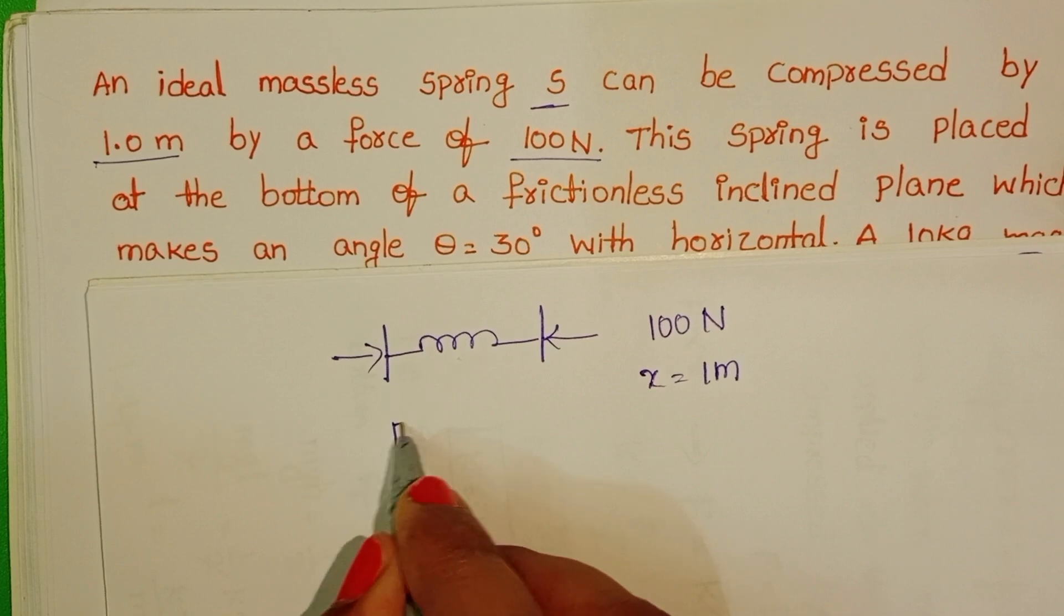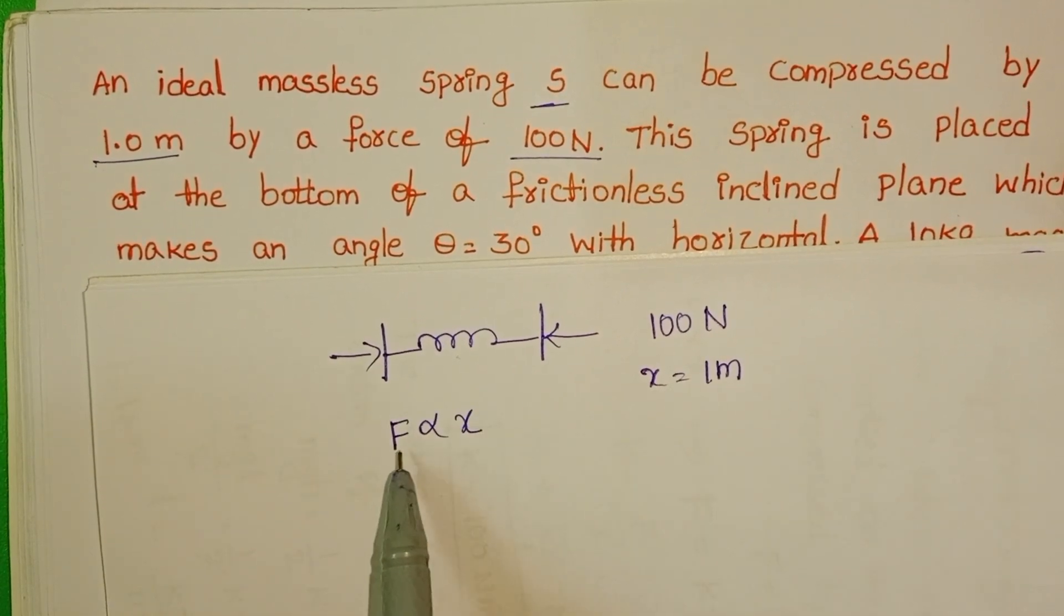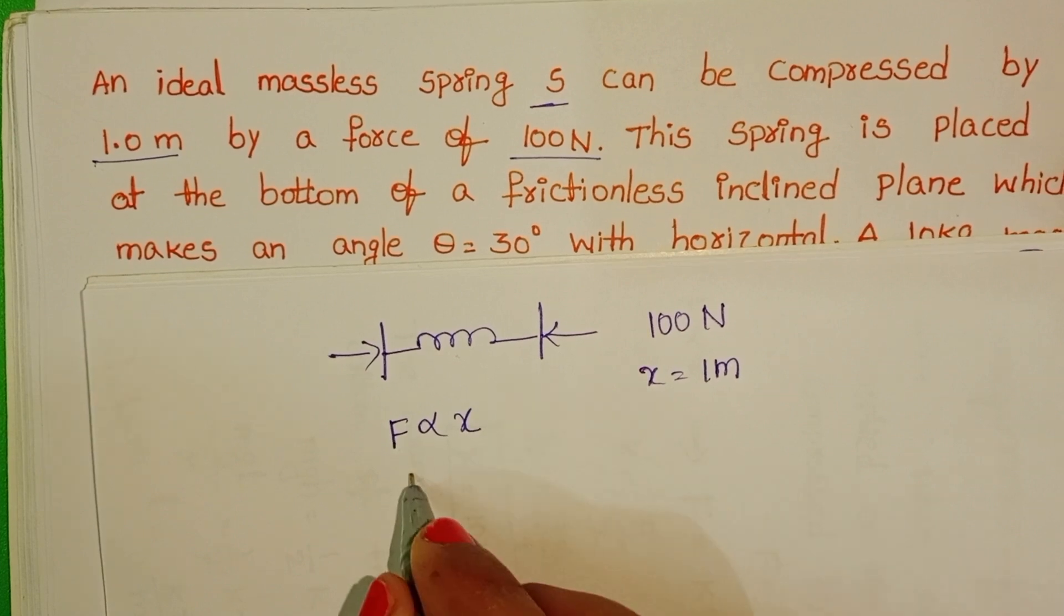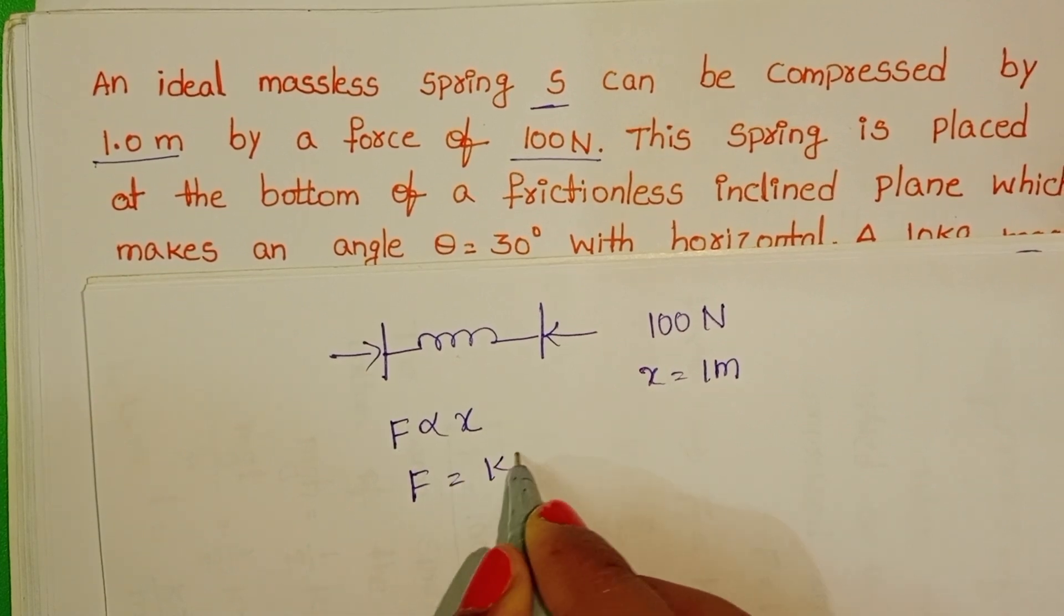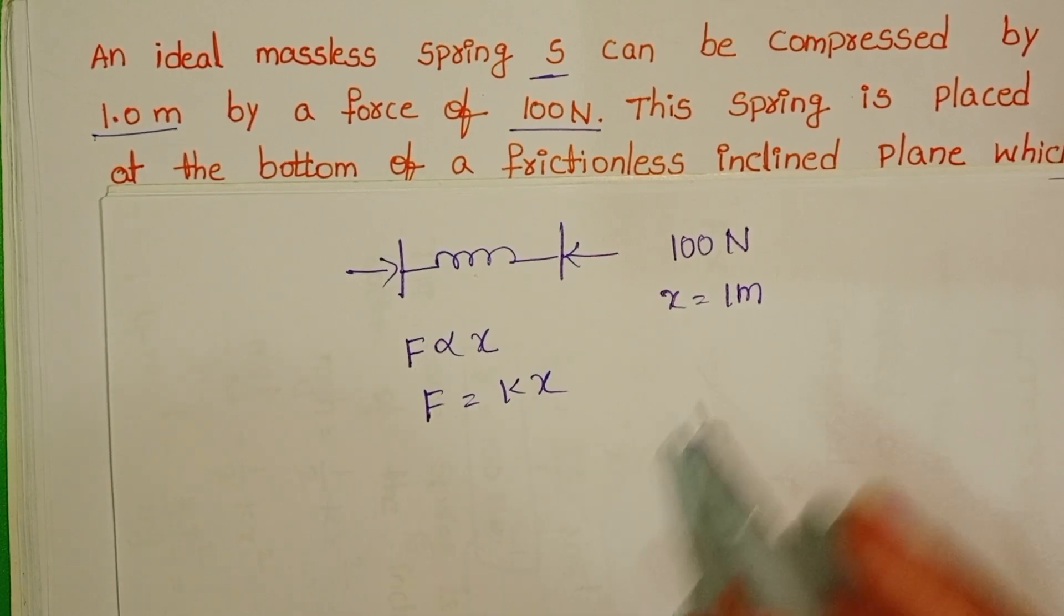We know the relation between force and compression is directly proportional. F proportional to x. F equals kx, where k is called spring constant or force constant.